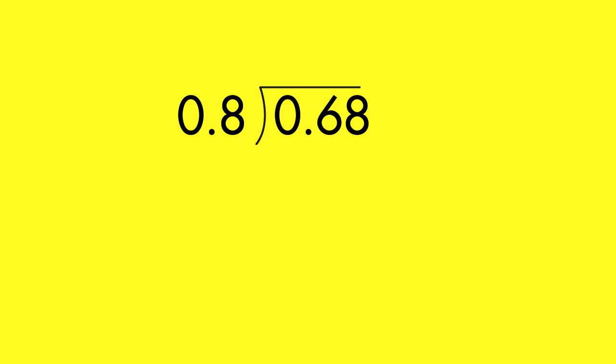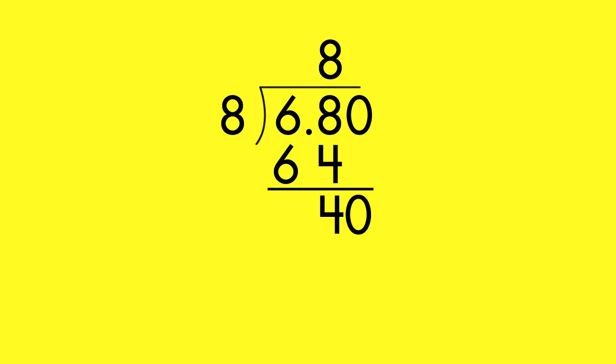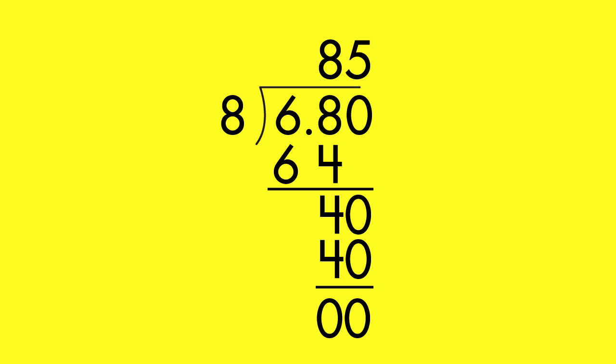Here's another way to divide numbers with decimals. First, move the decimal point one place to the right to make the divisor a whole number. Then, move the decimal point in the dividend right that same number of places. Now, divide as usual. Finally, move the decimal point up into the quotient.